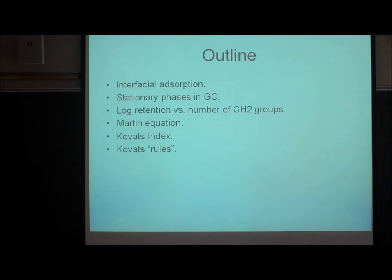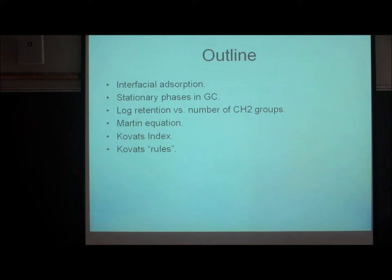There are on the order of 500 different kinds of GC stationary phases that you can buy commercially. Picking the right one is a challenging proposition. It certainly depends very much on the sample and type of sample you're dealing with — whether you're doing trace analysis at very low concentrations, or higher-level analysis where you have a lot more latitude.